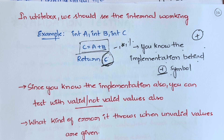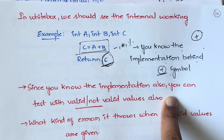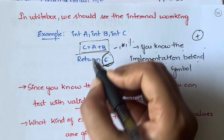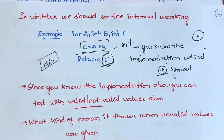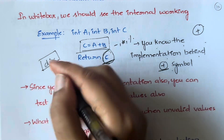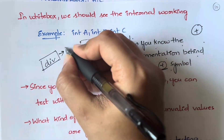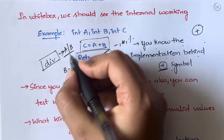Why do we need to know this as a tester? Why should I know the implementation? As a person testing the application, if you know the implementation, you can test with valid or invalid values. For example, let's say you have a button called 'div'. In white box testing you know the logic — the logic says it does a divided by b.